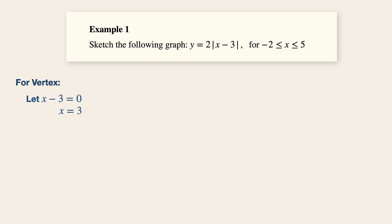So when x is equal to three, the value of y when you substitute it back into the equation is equal to zero for this case. Therefore, the vertex is at point three zero.